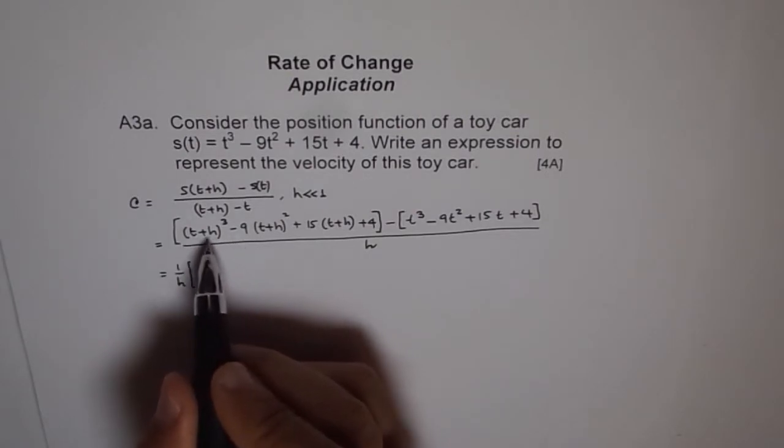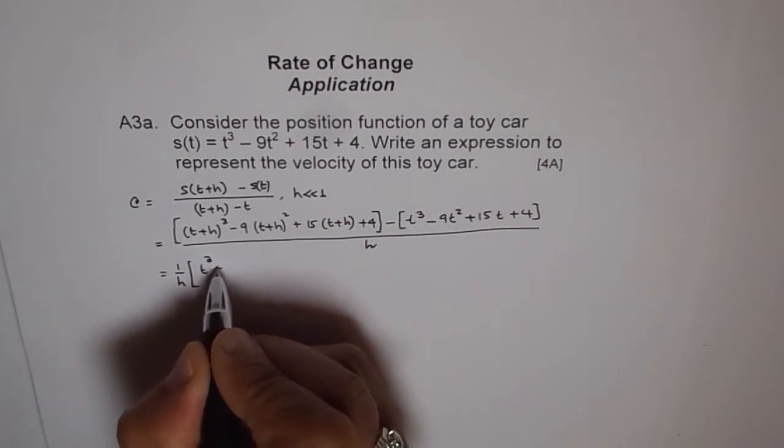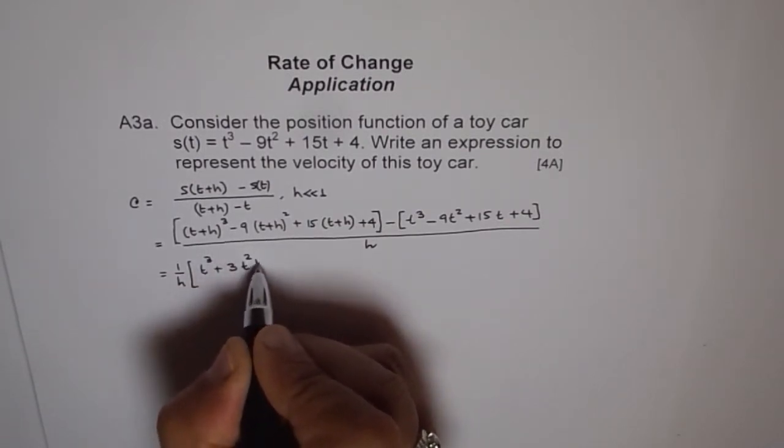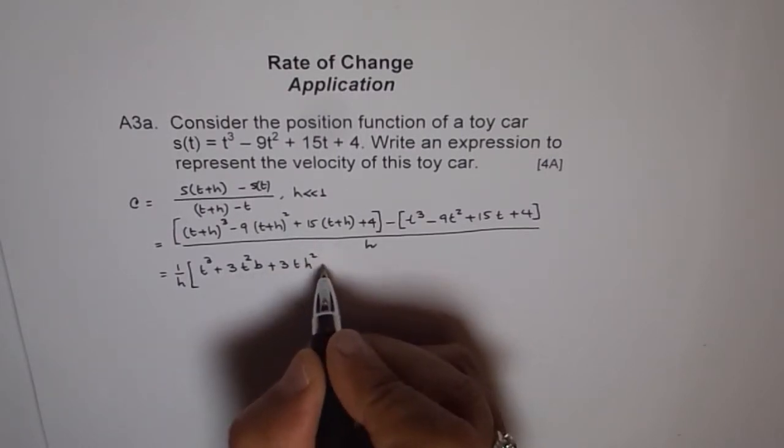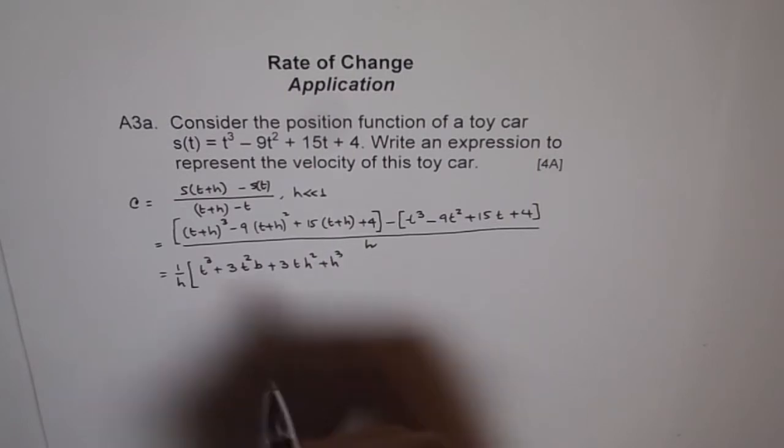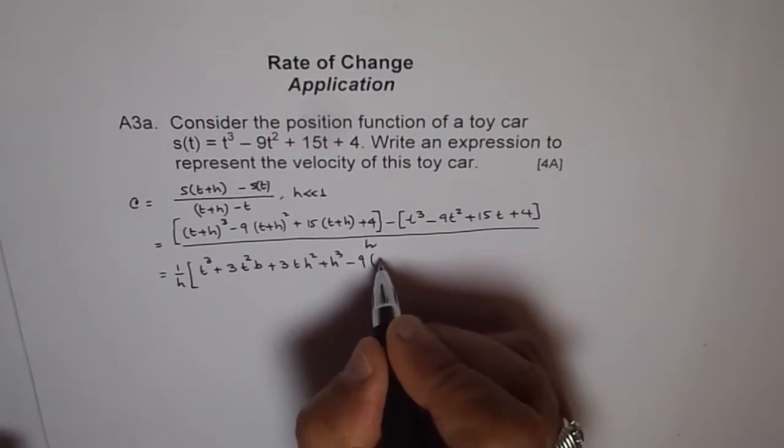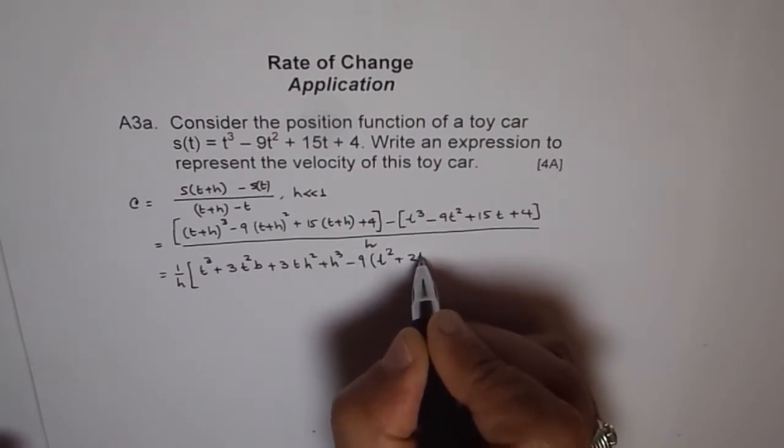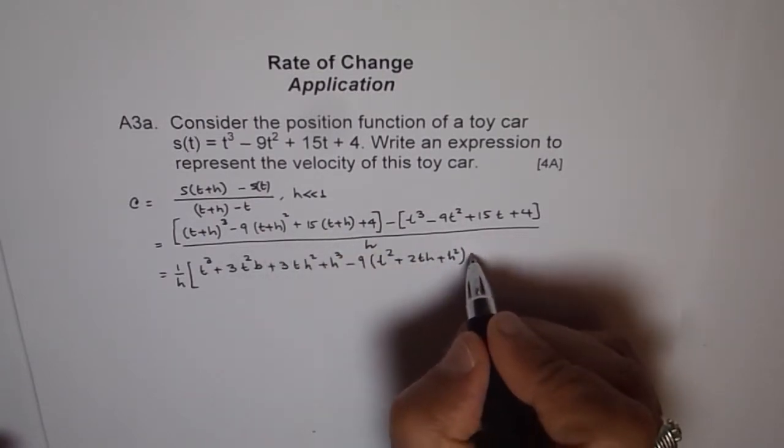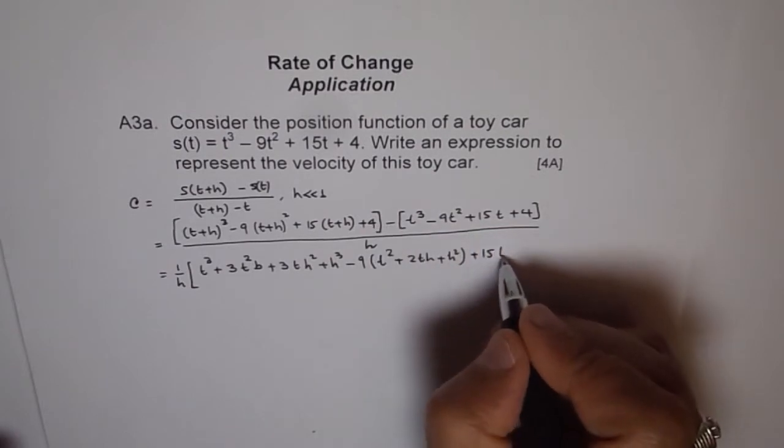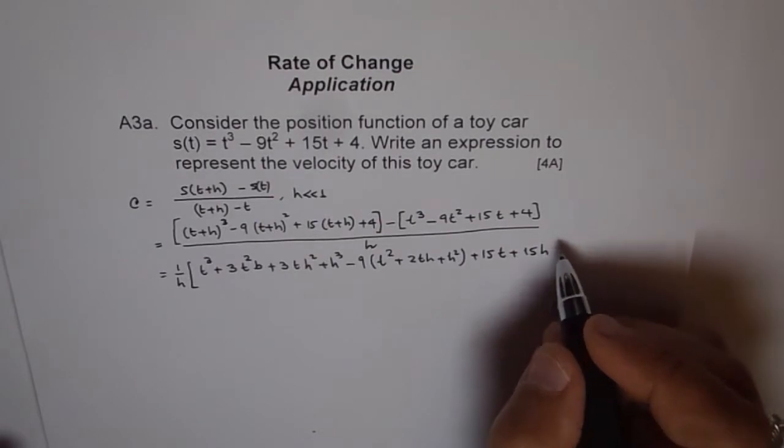Let's expand. (a+b)³ is what? a³ + 3a²b + 3ab² + b³, that is h³. And this term will be 9(t² + 2th + h²). And then we have plus 15t plus 15h. So this is our first half.